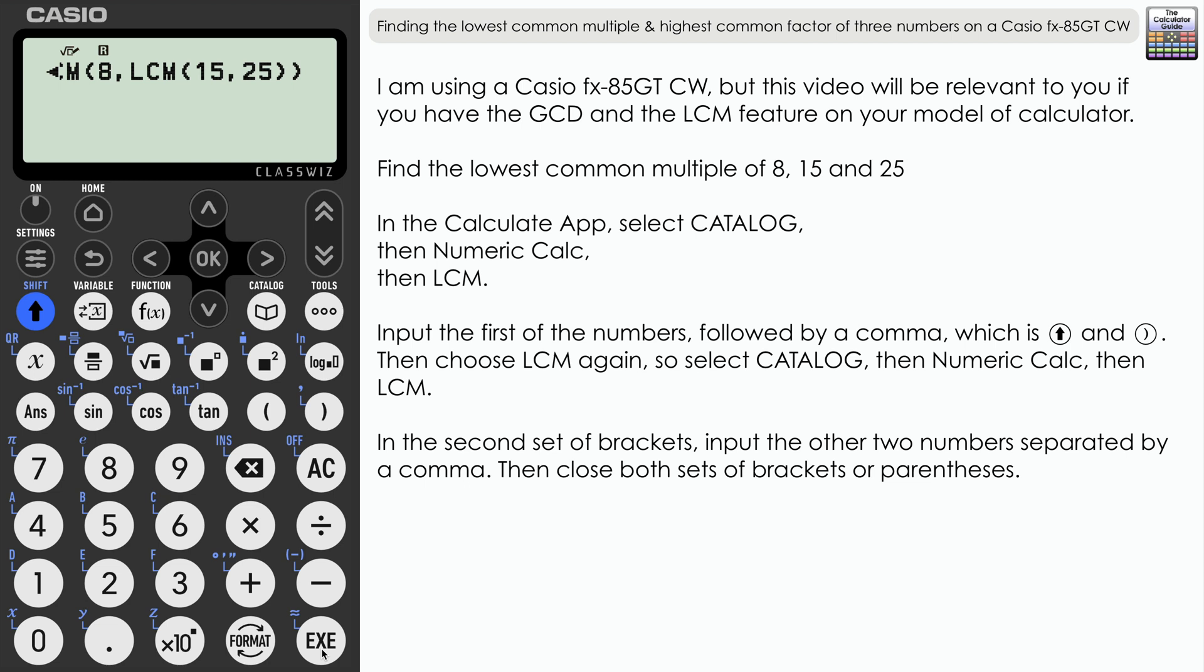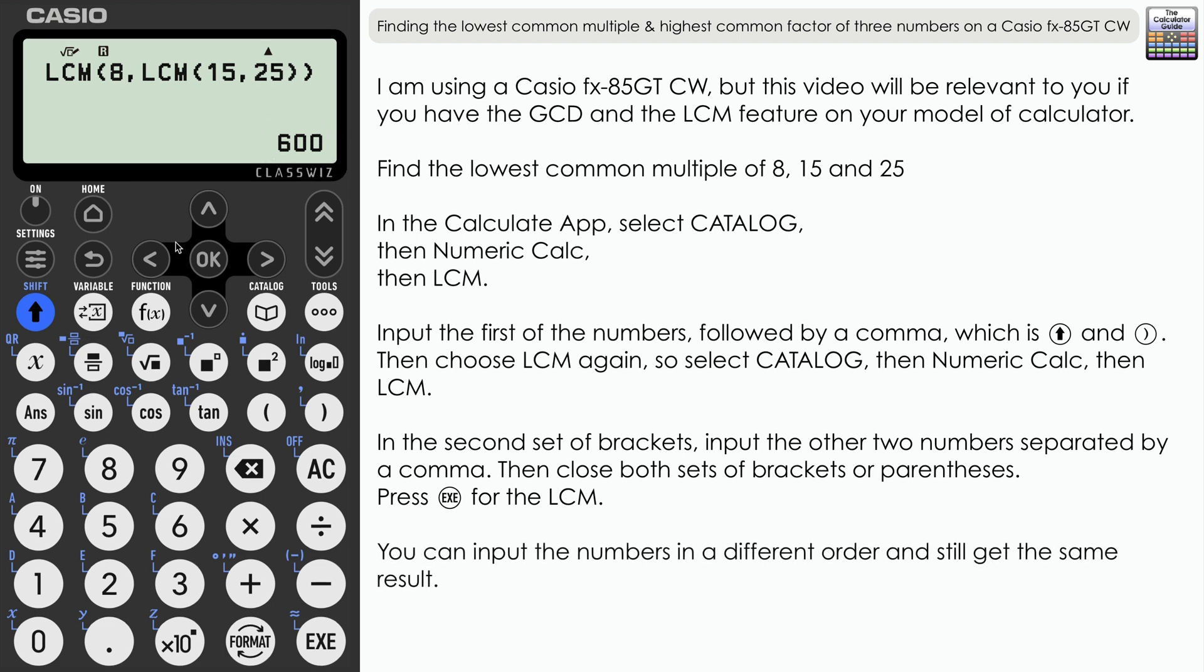This is because essentially the feature is designed for two numbers, the LCM of two numbers, and this is a bit of a workaround in order for you to be able to find the LCM of three numbers. So press Execute at this point, and here we have the lowest common multiple of those three numbers: it's 600.